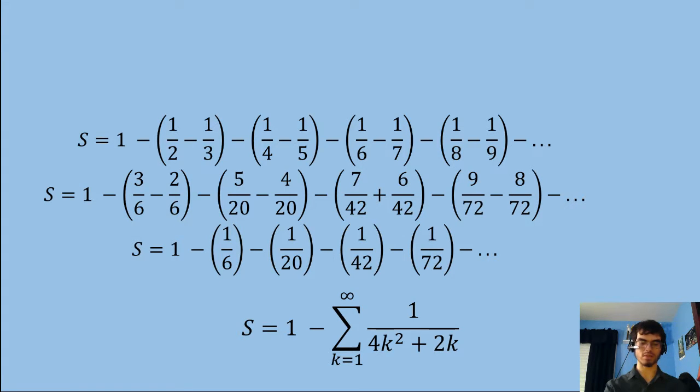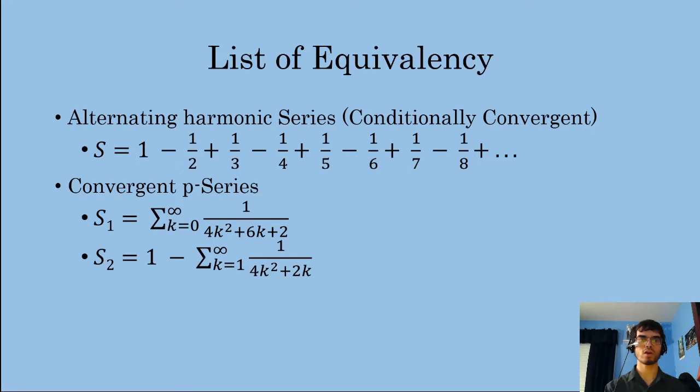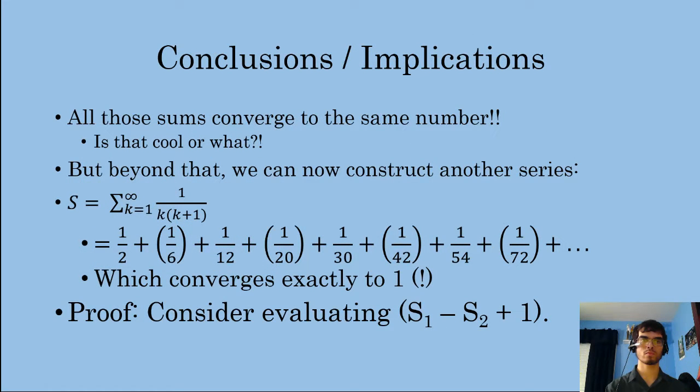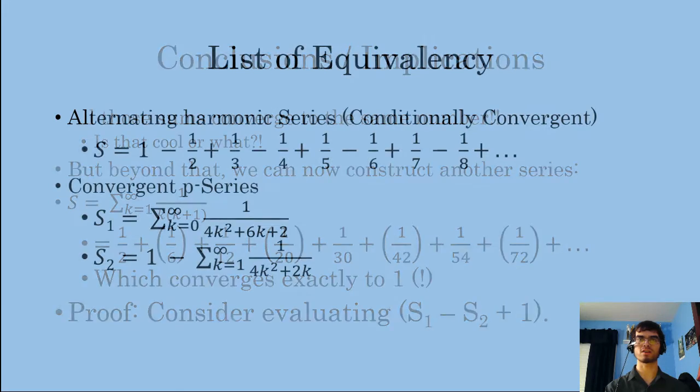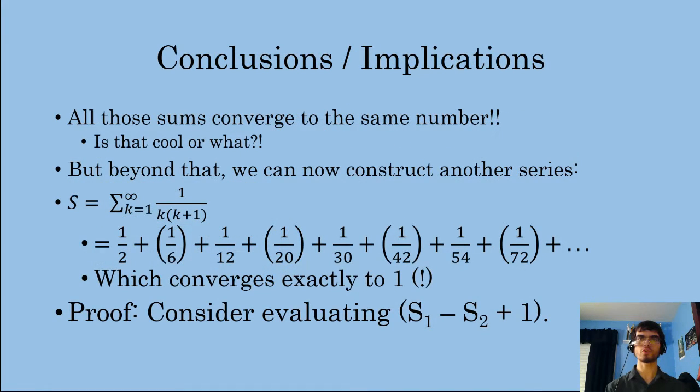But first, I guess I should just say the condensed form, the sigma notation form first of all. So it's one minus the sigma, k starting at one going to infinity, of one over 4k squared plus 2k. So again, another convergent p-series is obtained, and we in fact know that these converge to the same value. So that's very interesting of course. So all these sums that we put in our list of convergence or list of equivalency converge to the same number. So is that cool or what? Well of course, very interesting stuff.